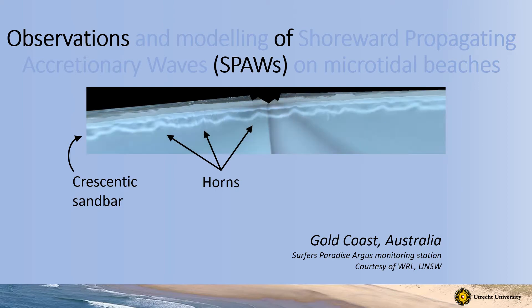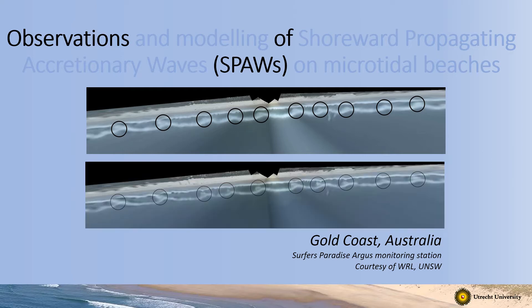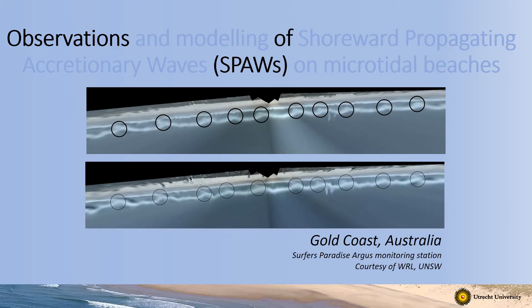Here we see the crescentic sandbar and then the wave conditions change. The circles indicate the horns, or the points where the spores are actually emerging during this change in wave conditions. Once they've emerged, they usually migrate onshore under less energetic conditions. Spores still exist and under the less energetic conditions they move onshore and eventually weld with the beach.